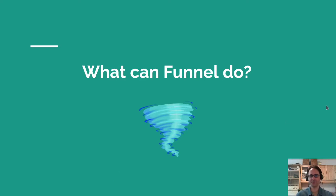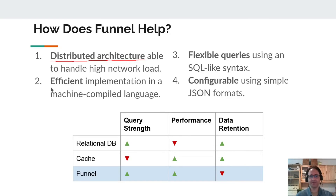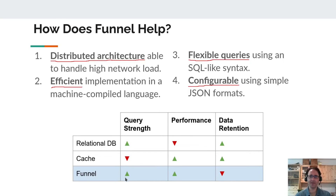So how does Funnel fit into this picture? Funnel is a little bit different — it was built specifically to handle these real-time problems. It's a distributed, network-native architecture built with high amounts of network load in mind from the very beginning. It's built using direct-to-machine compiled code, which gives very good performance results. It gives flexible queries like an SQL system, and is easily configurable using JSON data formats. It tries to achieve that marriage of good queries and high performance.